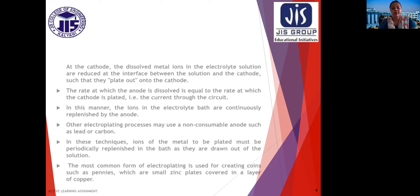Other electroplating processes may use a non-consumable anode such as lead or carbon. In this technique, ions of the metal to be plated must be periodically replenished in the bath as they are drawn out of the solution. The most common form of electroplating is used for creating coins such as pennies, which are small zinc plates covered in a layer of copper.